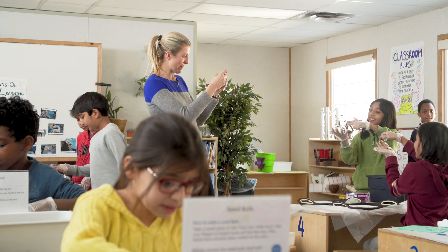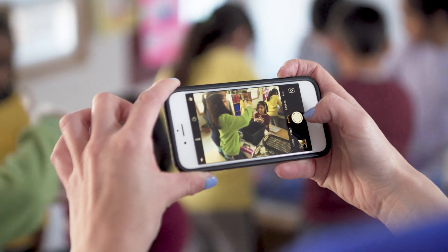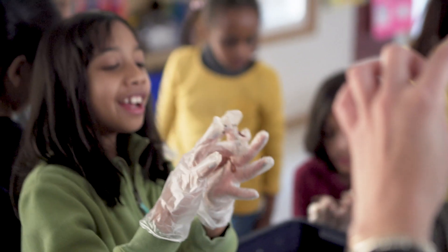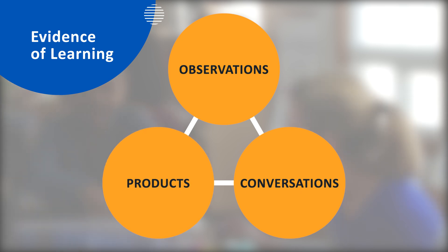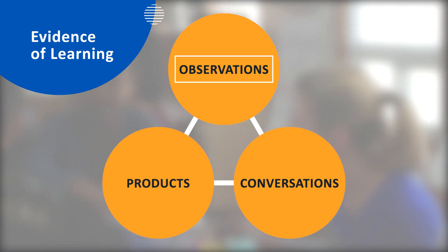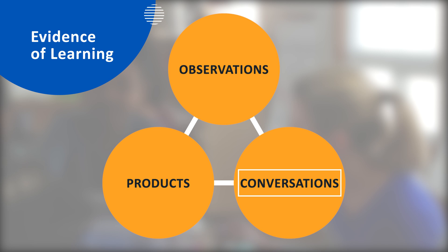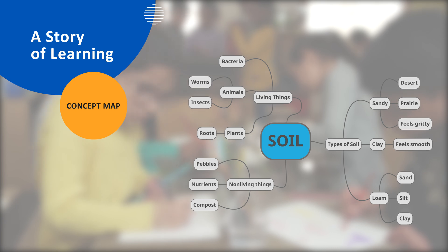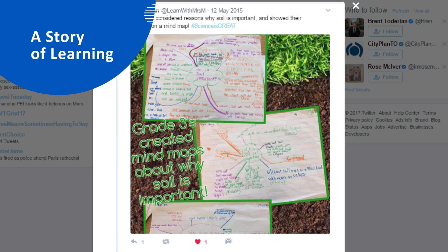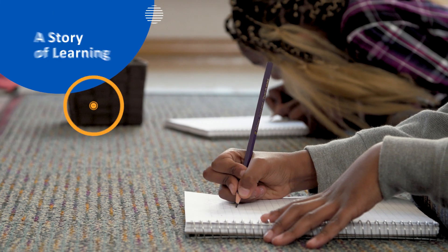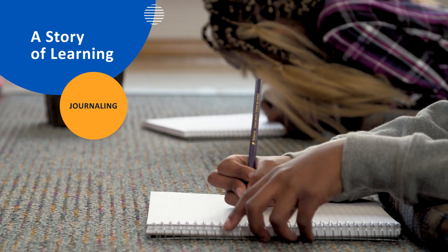The purpose of assessment is to improve student learning. How can we find out where students are in their understanding and meet them where they're at? Evidence of learning can be collected in multiple ways, including through observation of learners, conversations with learners, and examples of student work. A concept map is one way to capture student knowledge and wonderings about a topic. Students can create a map at the beginning of a unit and expand on it as they learn and explore. Katie's students use journaling to document their science investigations.